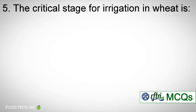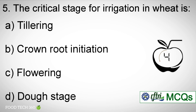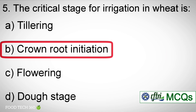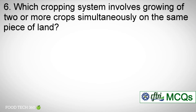Question number five: The critical stage of irrigation in wheat is — options: a) Tillering. b) Crown root initiation. c) Flowering. d) Dough stage. Correct answer: b) Crown root initiation.